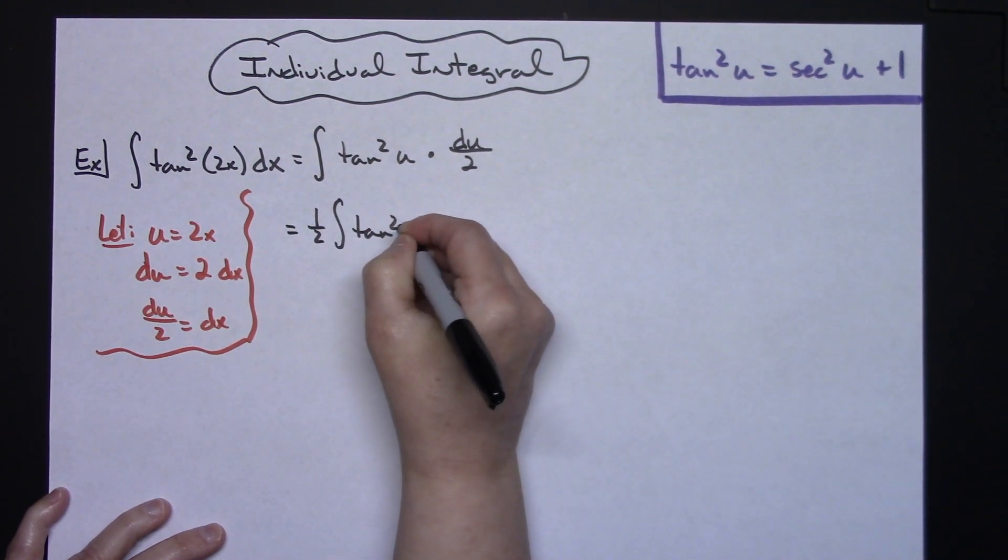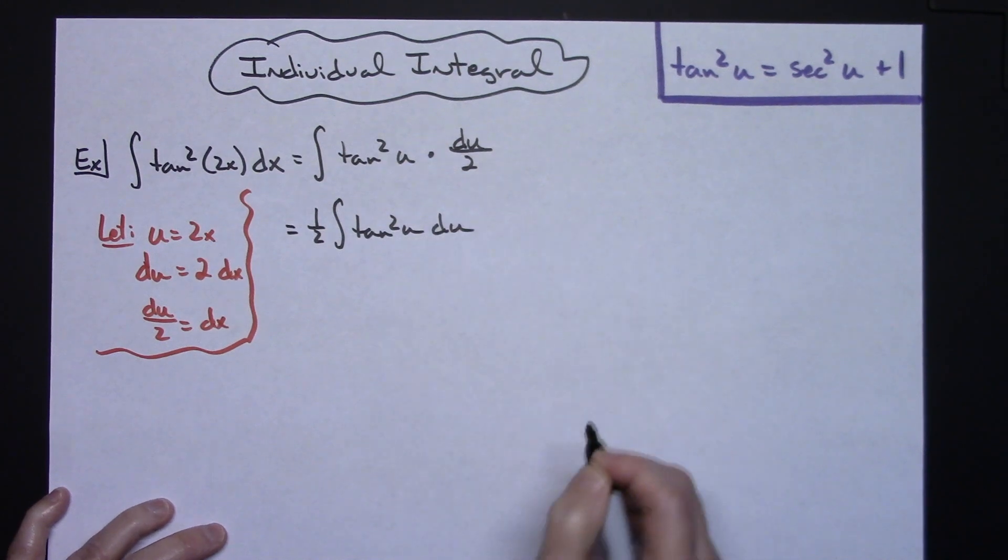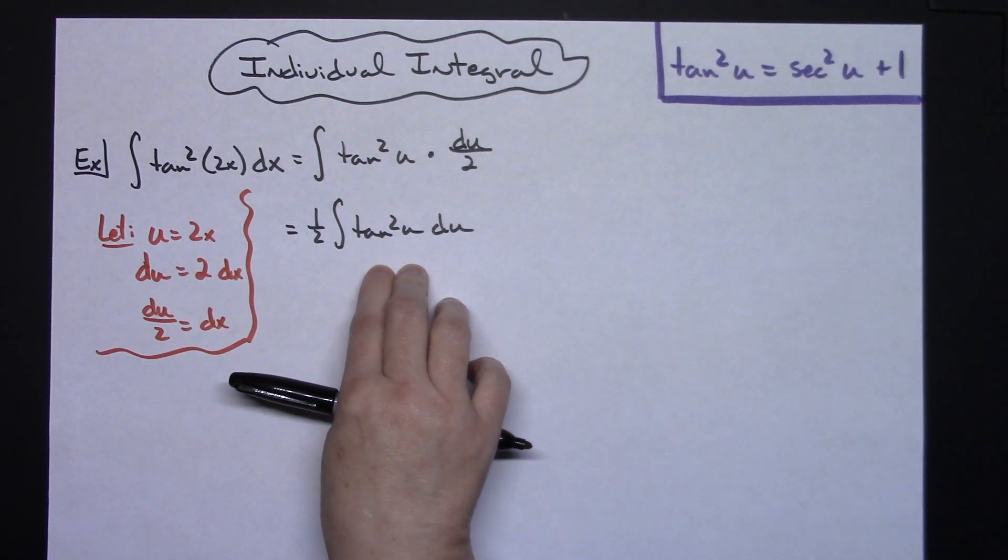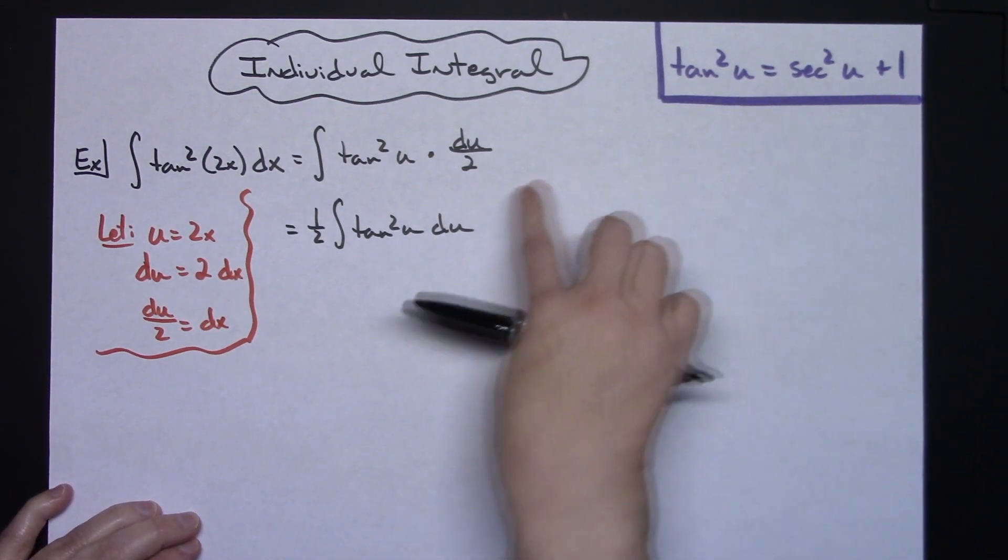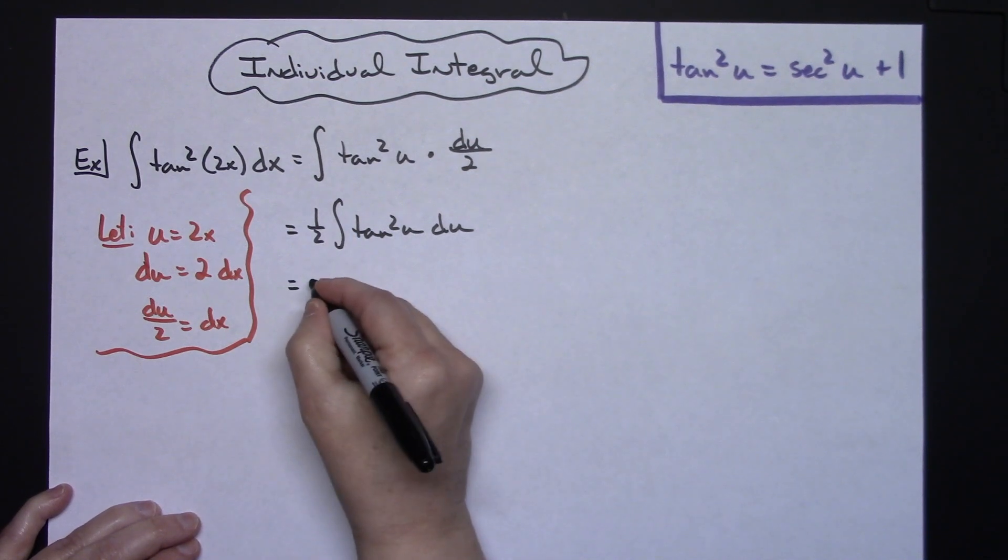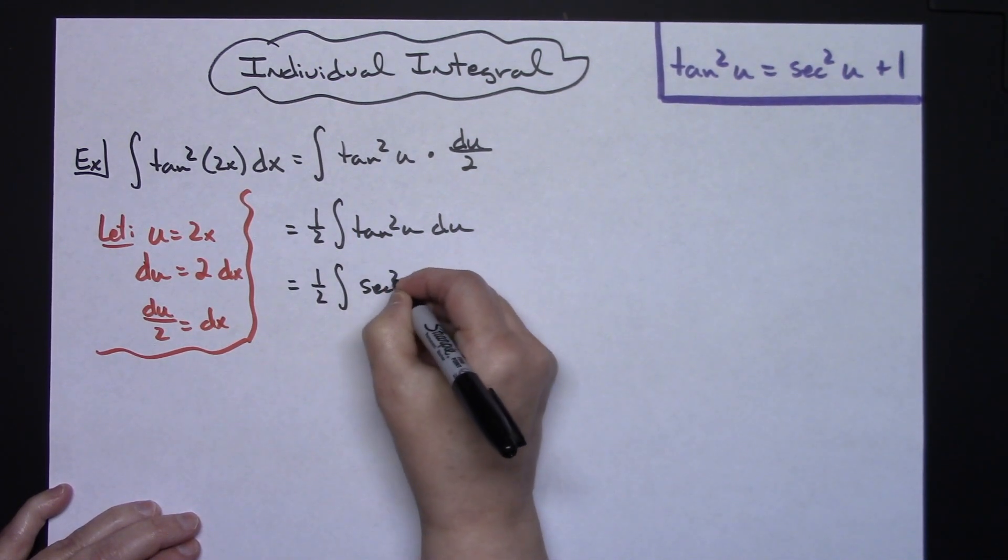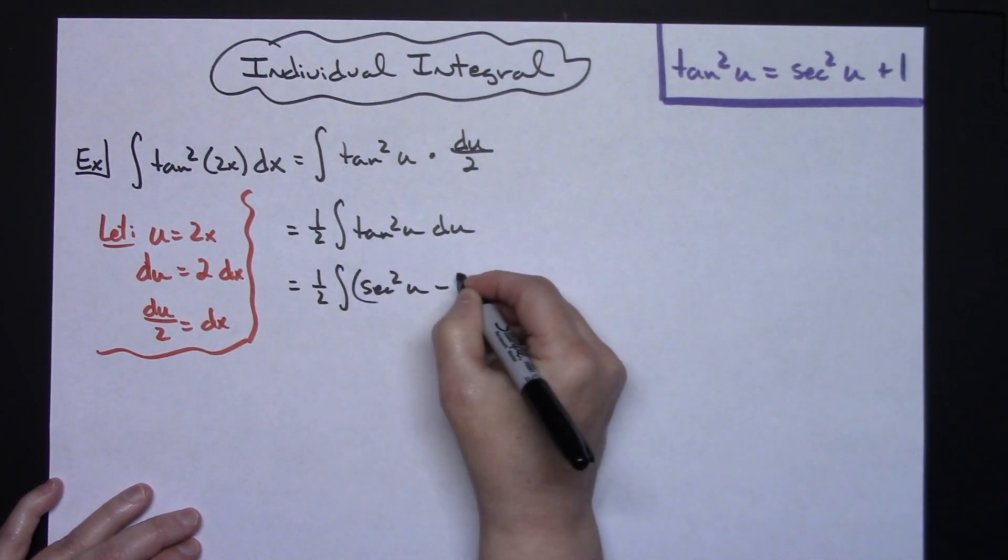Now at that point right here, this is where you're going to have to use a Pythagorean identity to substitute, because we cannot do the integral of tangent squared. So I'm going to substitute, and I will have one-half times the integral of secant squared u minus 1, and then du.